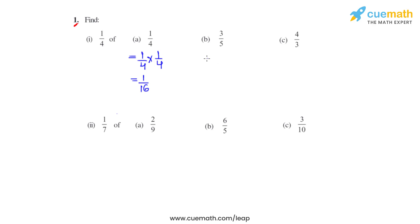Similarly doing part B, we have to find 1/4 of 3/5. So we write 1/4 times 3/5. Multiplying the numerators we get 3. Multiplying the denominators we get 20. So the answer becomes 3 over 20.